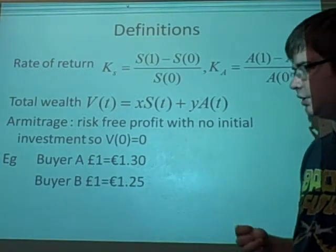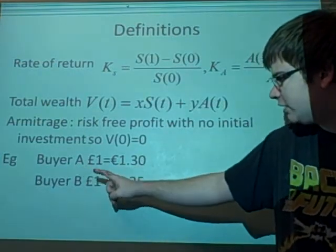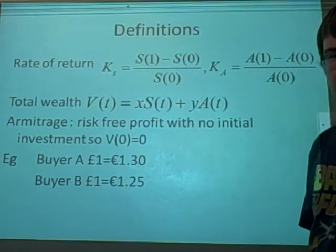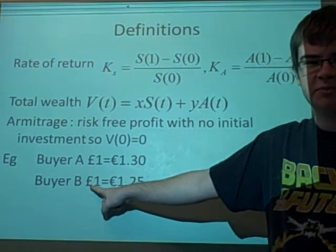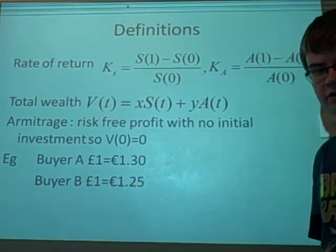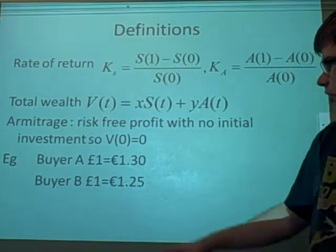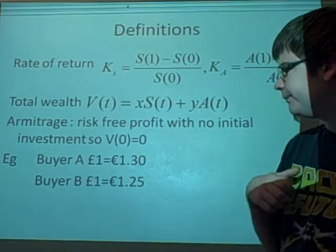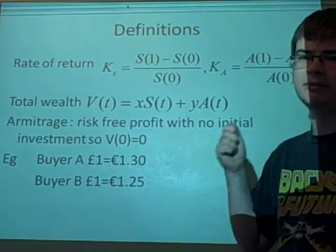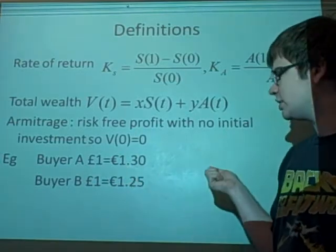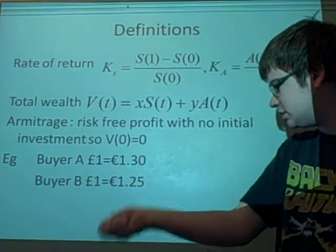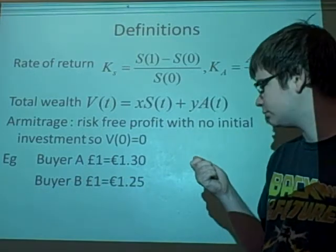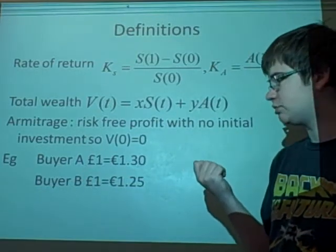If we have buyer A, they buy and sell pounds at 1 euro 30. Buyer B buys and sells pounds at 1 euro 25. If you went to buyer B and said, can I borrow a pound, you get the pound from him, then you'd go to buyer A and sell him the pound, get 1 euro 30. You take that 1 euro 30 back to buyer B—here's your money. You're giving 1 euro 25, which means you've got 5 cents extra. That's an arbitrage situation.